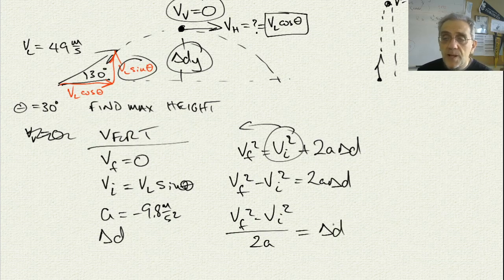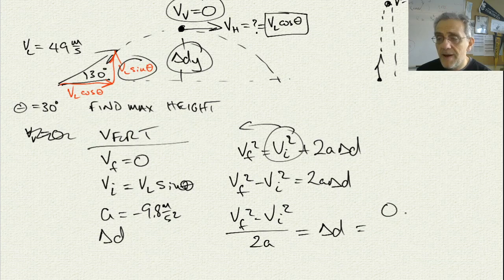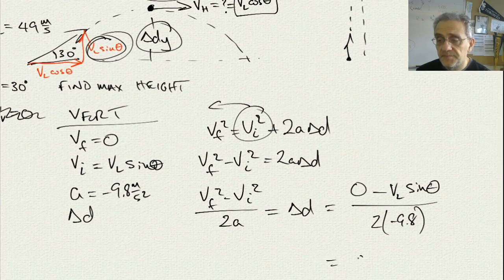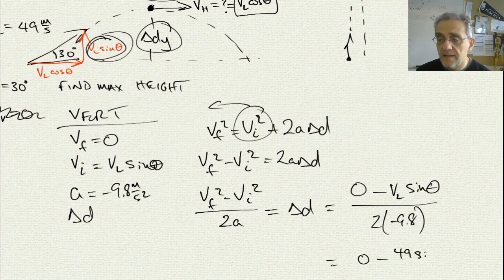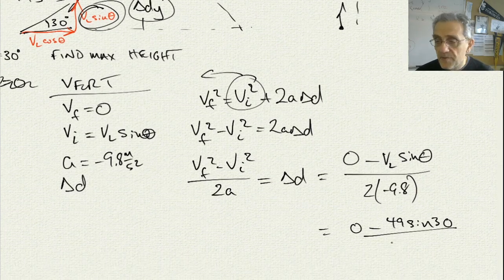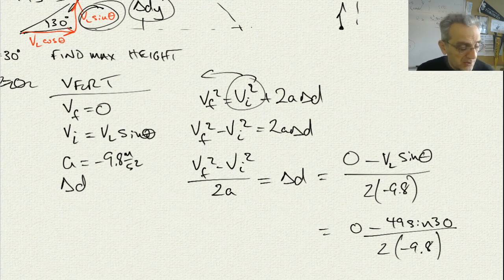And there's my equation. I can now plug my values into it to solve for the answer. Let's put in VF is 0, minus VI, which is here, VL sine theta, divided by 2 times negative 9.8. Now, I'll substitute the values for VL and sine theta now, and I'll get 49 sine 30, divided by 2 times negative 9.8. And my answer will be...